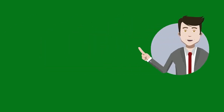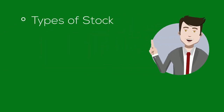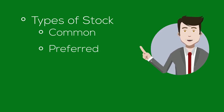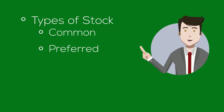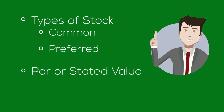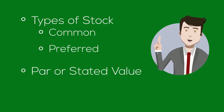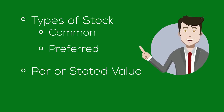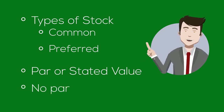A corporation has two different types or classes of stock it can issue: common or preferred. Common stock, as its name implies, is the most common type. The state in which each corporation incorporates and files articles of incorporation sets a par or stated value for each share of common stock. Originally, this amount indicated the value of the stock. However, things have changed and this amount no longer has anything to do with the value of the stock and is only important for recording the sale of the stock. In fact, some states don't even issue a par or stated value — we call this no par value stock.